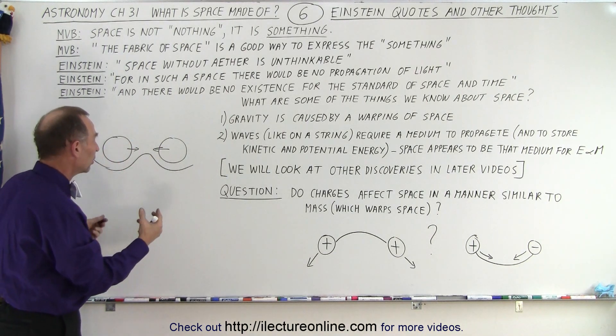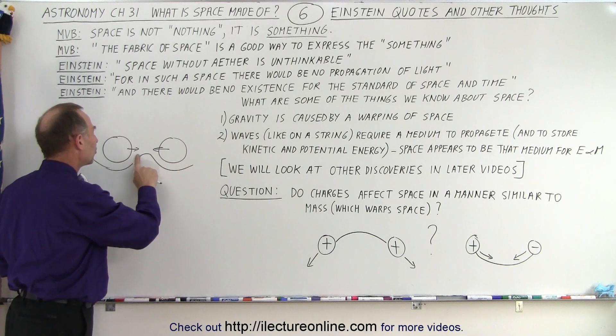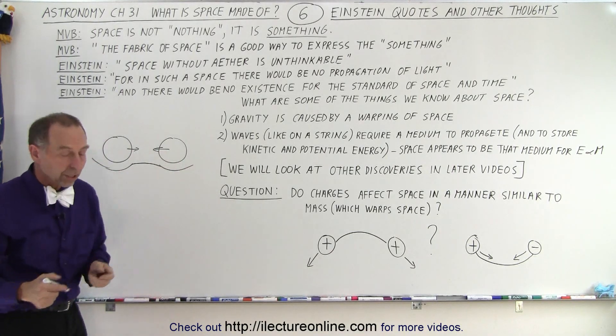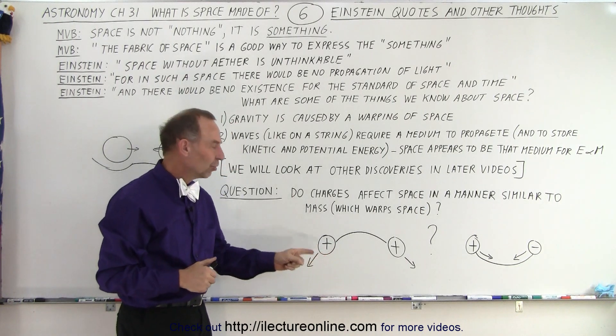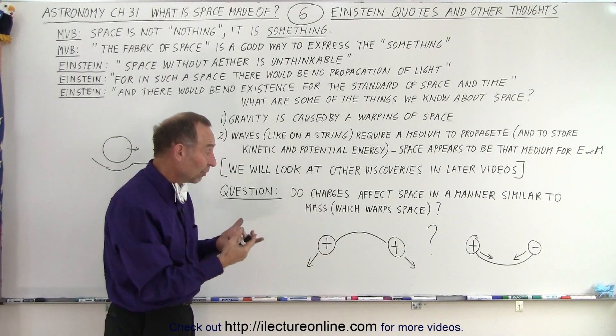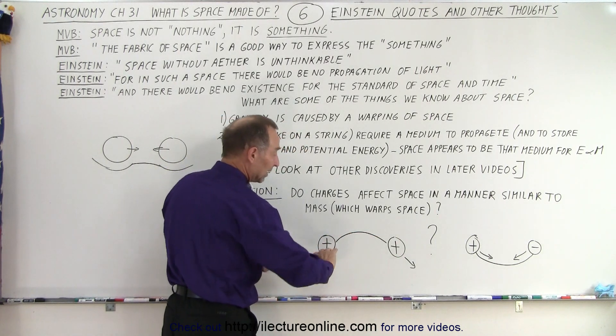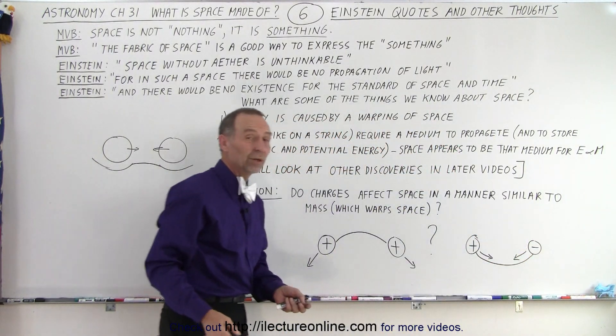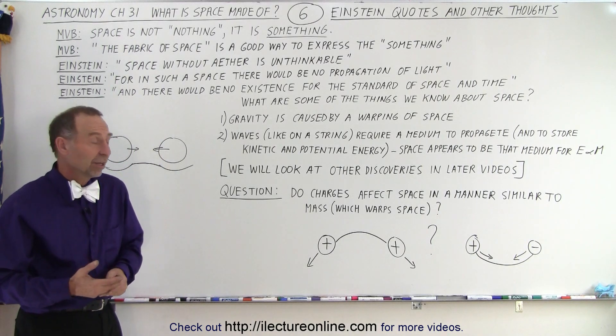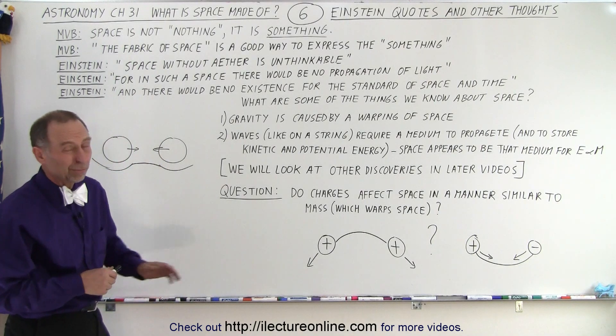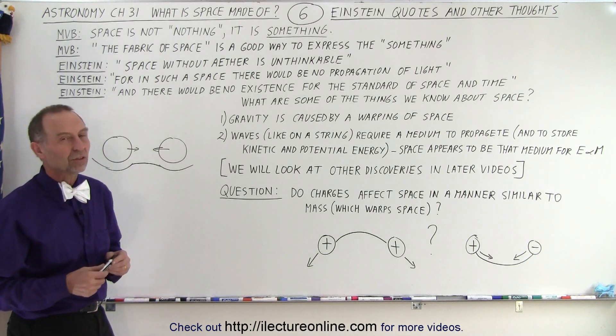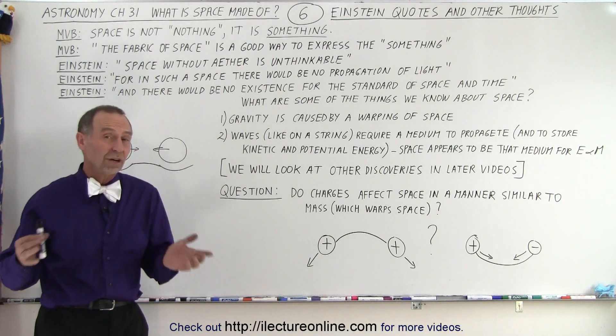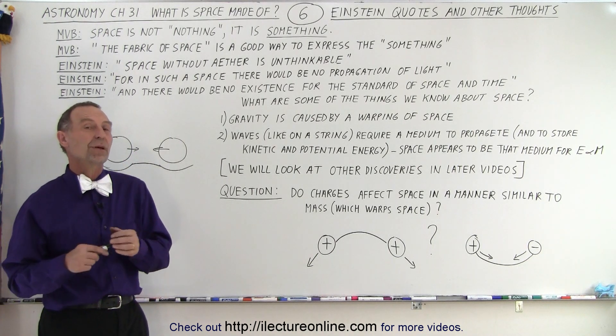Maybe we have a similar kind of property to space that is affected by the presence of charges. If there's two like charges, they tend to warp space in such a way that they get repelled from one another. If they're unlike charges, maybe warp space in a way where they're attracted to one another. That differs with some of the other theories that we've heard from other very famous physicists, so I'm not sure that this is even remotely correct, but it's something I still want to explore a little bit more as we look at the various properties of space.